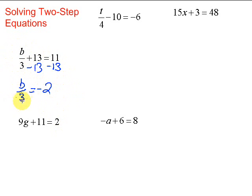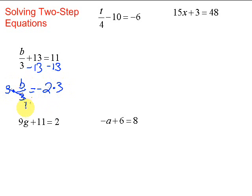Now this should look familiar — we've solved equations like this before. We have b divided by 3 equals negative 2. What's the opposite of dividing by 3? That's multiplying by 3. So we're going to multiply both sides by 3. The divide by 3 and times 3 are opposites, so they cancel. We're left with b equals negative 2 times 3, which is negative 6.